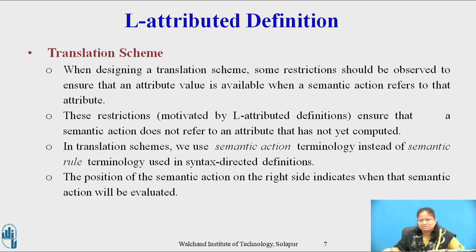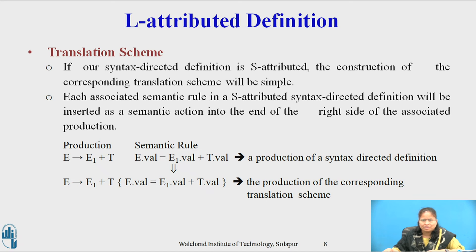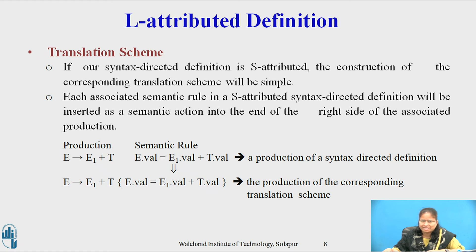The position of the semantic action on the right side indicates when that action will be evaluated. If a syntax-directed definition is S-Attributed, we construct the translation scheme by creating an action consisting of an assignment for each semantic rule and inserting the semantic action at the end of the right side of the associated production. For the production E → E1 + T, the associated semantic rule is E.val = E1.val + T.val. The corresponding translation scheme production is: E → E1 + T { E.val = E1.val + T.val }.